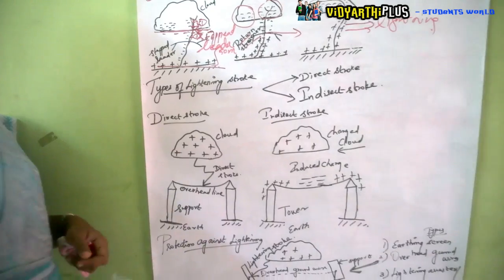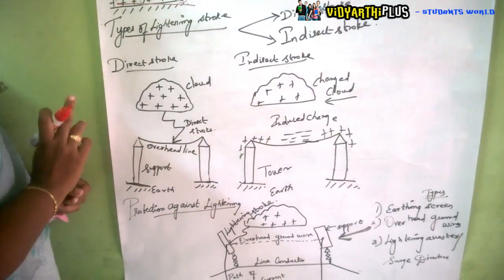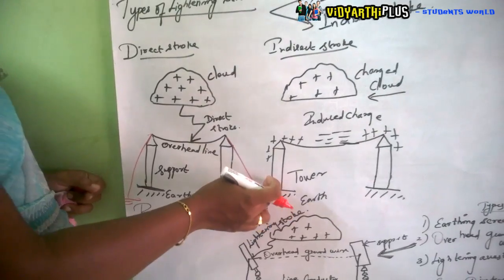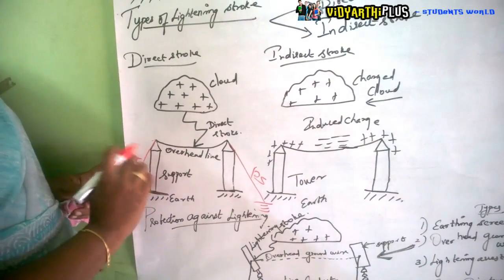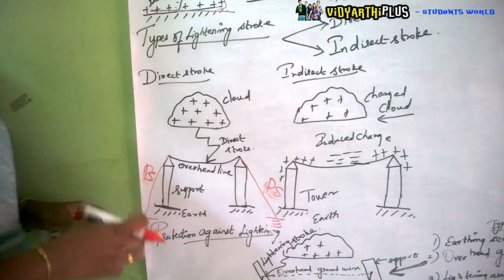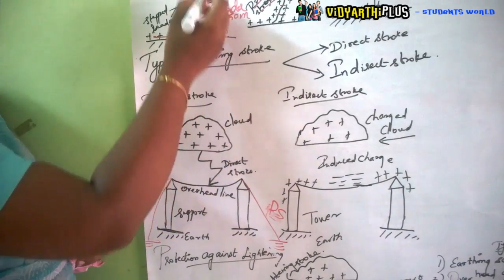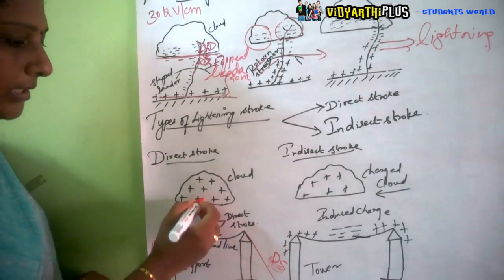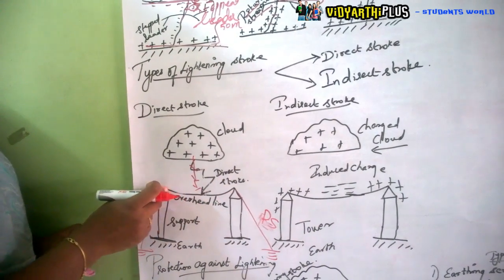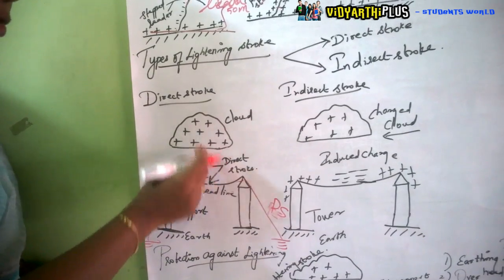In a direct stroke, a positively charged cloud is above two towers with an overhead line running between them, connected to the ground. The charges from the cloud come down as a stepped leader — 50 meters at a time — and finally strike the overhead line directly, which immediately gets affected by this direct stroke.